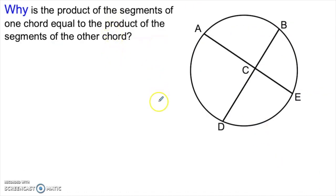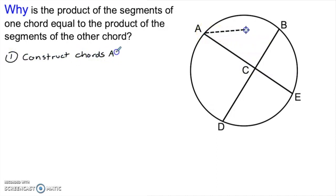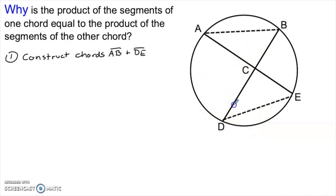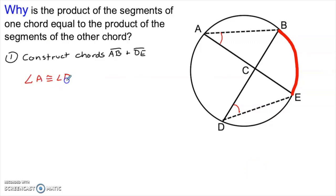But why is it that the product of the segments of one chord equals the product of the segments of the other chord? Here we have a circle and two chords intersecting. I've labeled the intersection C because I'm not going to assume it's the center. As is often the case when proving one of these theorems, I'll start by adding in some extra chords — a chord between A and B and a chord between D and E. Now I get two triangles and a lot of inscribed angles. Angle D and angle A are both inscribed to the same arc, arc BE.